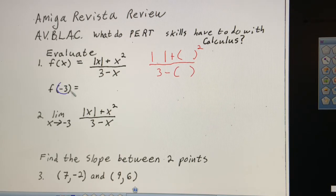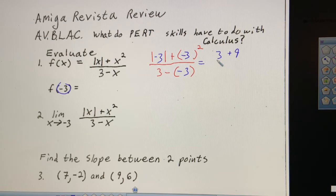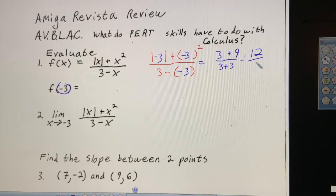We're just going to plug in negative 3. The absolute value of negative 3 is positive 3. Negative 3 times negative 3 is positive 9. And negative negative 3 is positive 3. So this is going to equal 3 plus 9 over 3 plus 3, which equals 12 over 6, which simplifies to just 2.